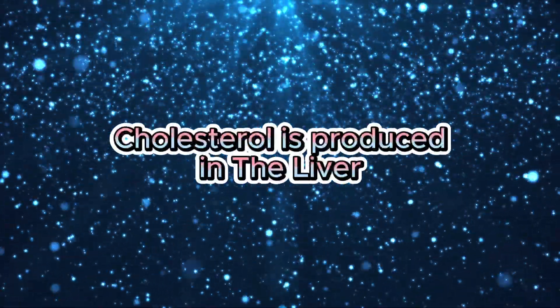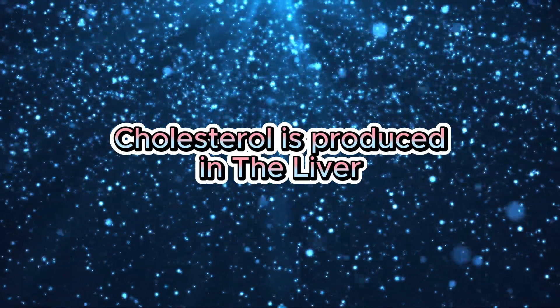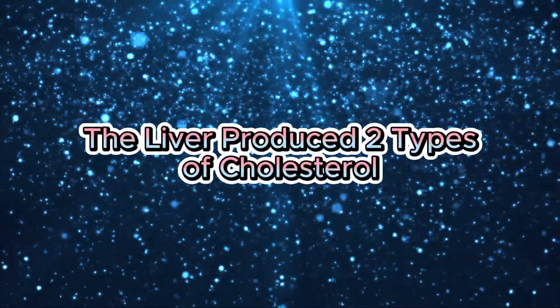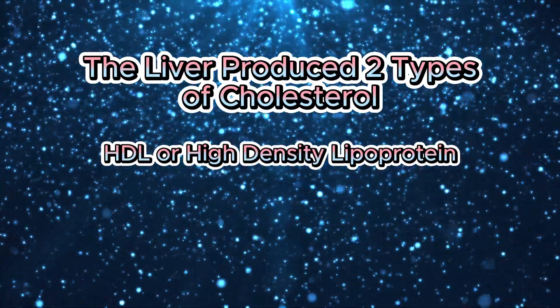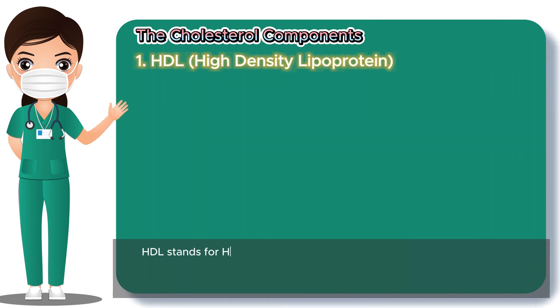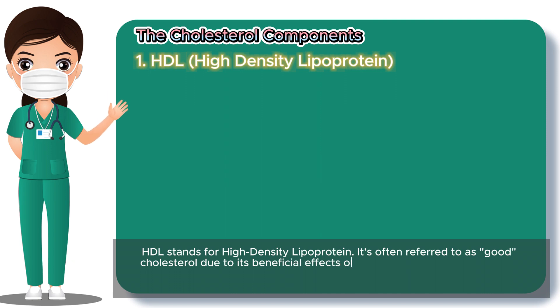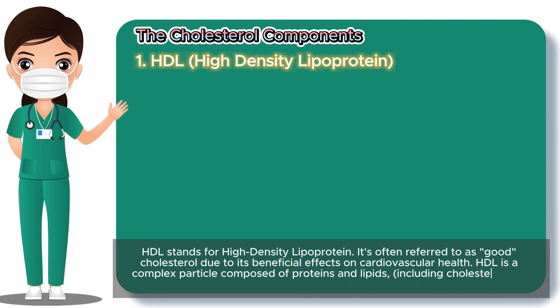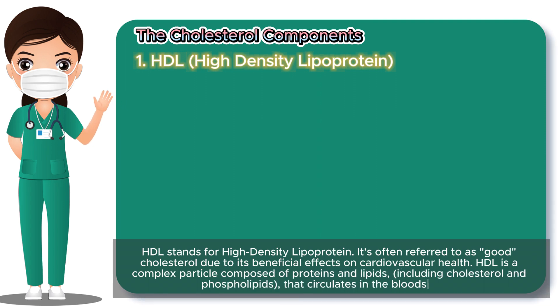Chapter 2: The Breakdown of Cholesterol Components. As shared in Chapter 1, cholesterol is a vital substance produced primarily in your liver. The liver produces two types of cholesterol: first, HDL or high-density lipoprotein, and second, LDL or low-density lipoprotein. HDL stands for high-density lipoprotein. It's often referred to as good cholesterol due to its beneficial effects on cardiovascular health. HDL is a complex particle composed of proteins and lipids, including cholesterol and phospholipids, that circulates in the bloodstream.